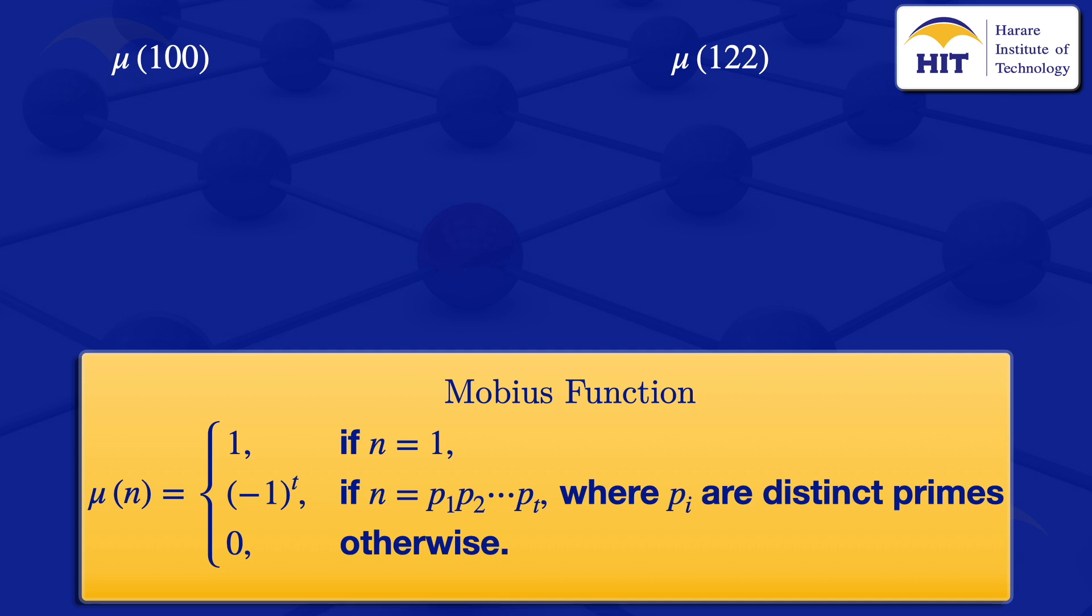So when we are looking at the first one, μ(100), I'll find the prime factorization of 100. The prime factorization of 100 is 2 times 2 times 5 times 5. In this case we are having these primes here, and these primes, they are not distinct.